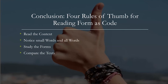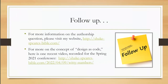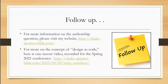In conclusion, these are my four rules of thumb for reading form as code: read the context; notice small words and all words, and think about what they mean in their contemporary context; study the forms in their contemporary context; and compare the relevant texts. For more information, please consider visiting my website, shakespearsbible.com. I will put these links into the chat. My website has been down for a number of years, and I'm very excited to have it back up and available as a resource for our movement. Thank you for your attention, and check out the chat for those links.